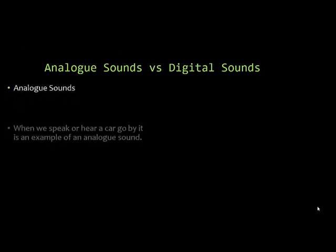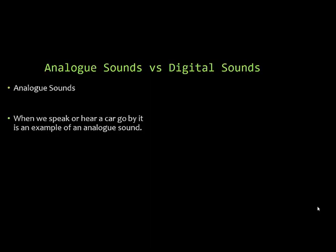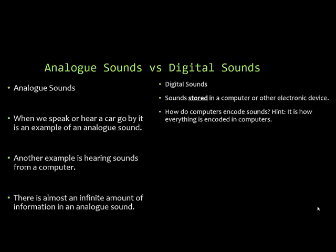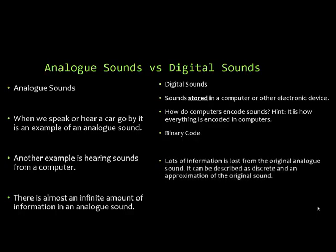Analog sounds are any sounds that you hear — when we speak or hear a car go by, that is an analog sound. Sounds coming out of your computer are also analog sounds. There's almost an infinite amount of information in an analog sound. Digital sounds, on the other hand, are sounds stored in a computer or other electronic device, encoded through binary code — a series of zeros and ones. Lots of information is lost from the original analog sound; digital sound is discrete and an approximation of the original.